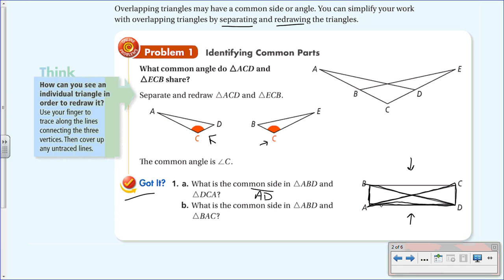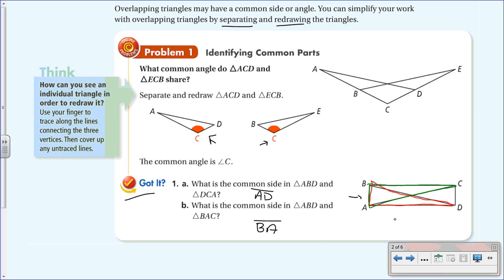For part B, I'll use two different colors — the red triangle for ABD and green for BAC. Tracing both triangles, the side traced over with both colors is BA. Therefore, BA is the common side in triangle ABD and triangle BAC.